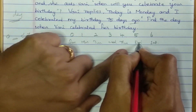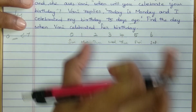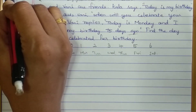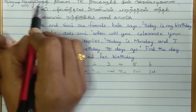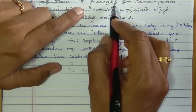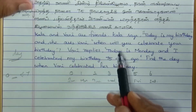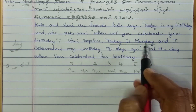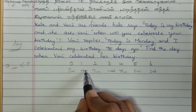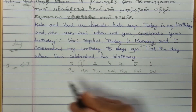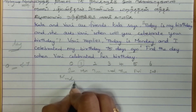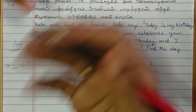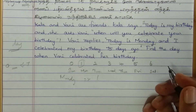Today is Monday. Before 75 days — we need to find the day that is 75 days before Monday.